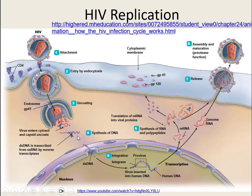DNA likes to hang out in the nucleus, so that's exactly where this viral DNA goes — inside the nucleus of our CD4 white blood cells. It integrates into our cells' own DNA. Once it integrates that viral DNA into our DNA, our cells become a virus-producing factory.